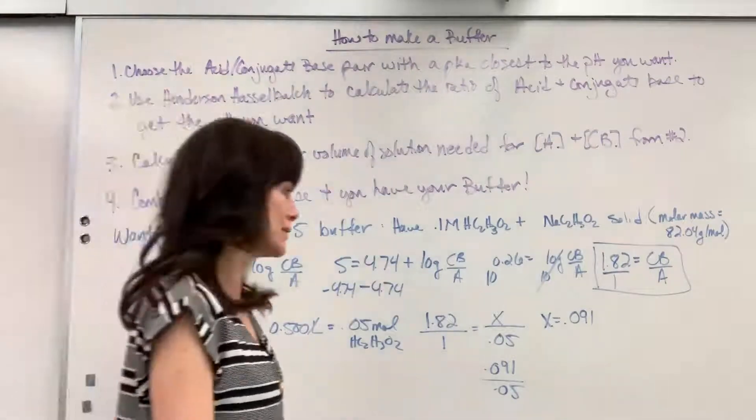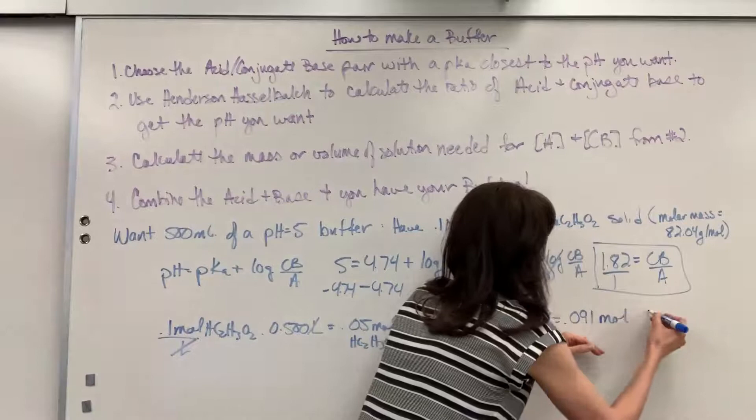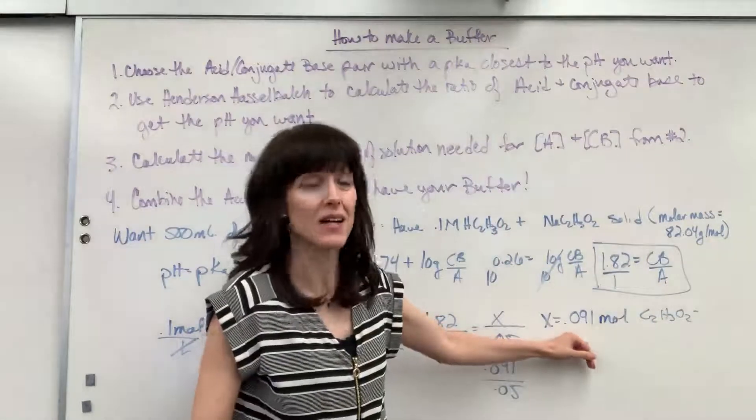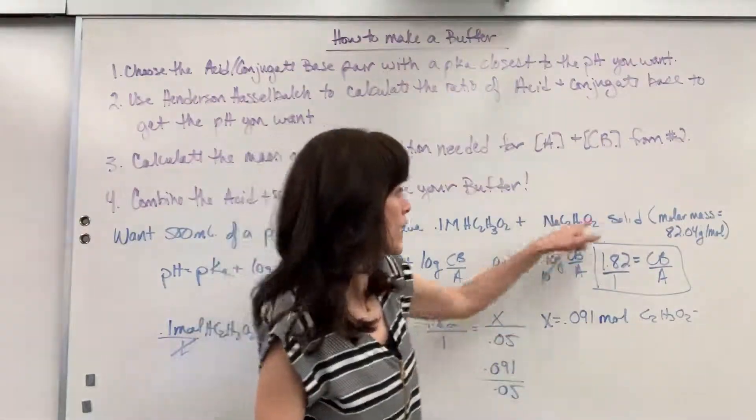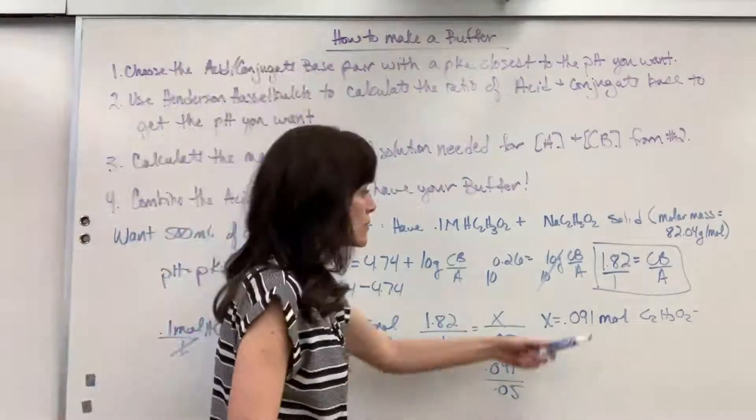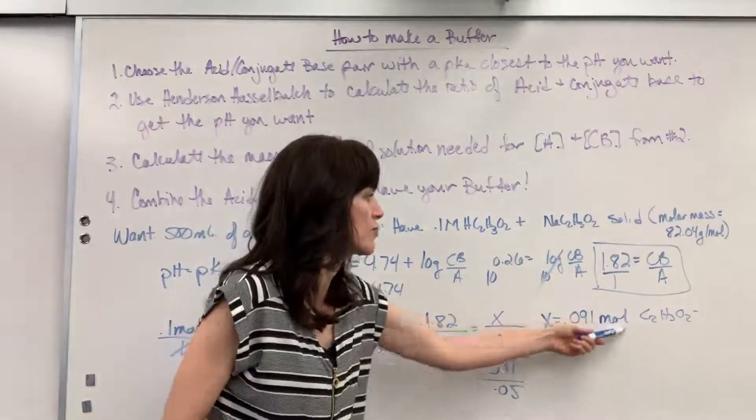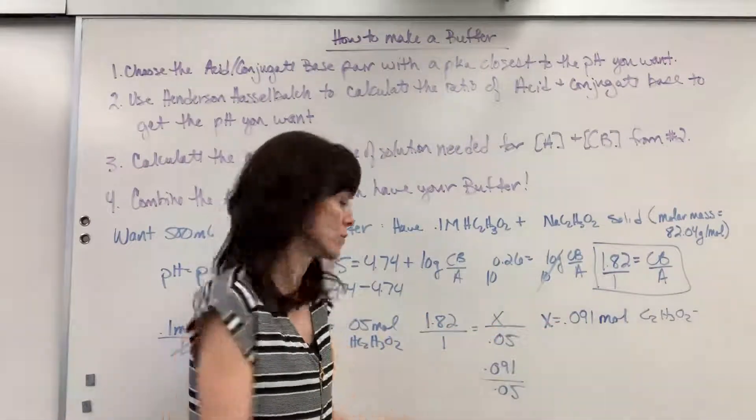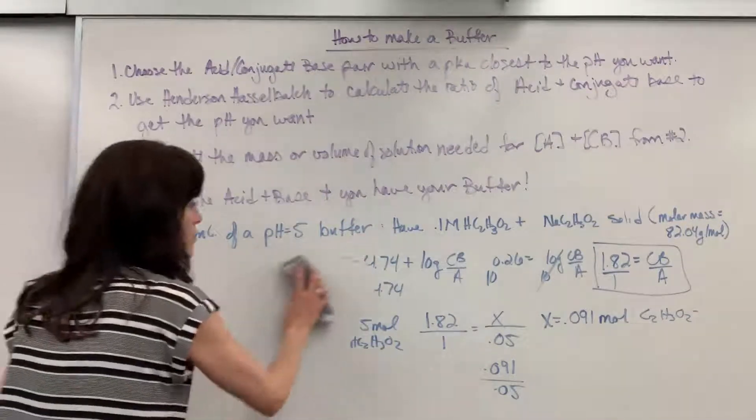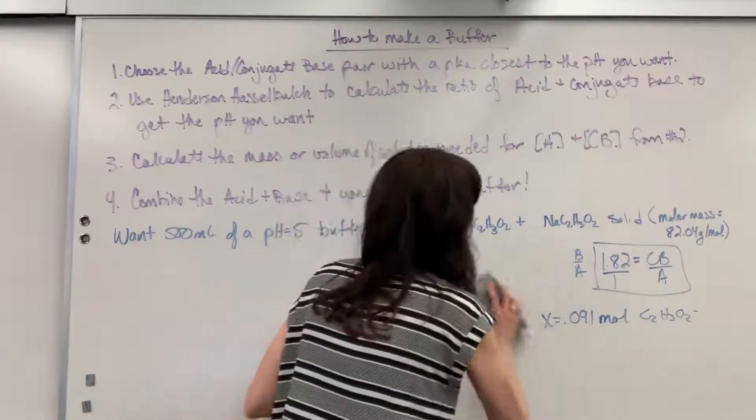So now I have to figure out, well, I need this many moles of the conjugate base, the C2H3O2 minus, that acetate ion. I've got to add that many moles. Well, I have a solid. I have this little bottle of sodium acetate. So let's figure out the mass of the acetate ion if we've got the 0.091 moles. So I'm going to erase this just to get a little bit more room for us.